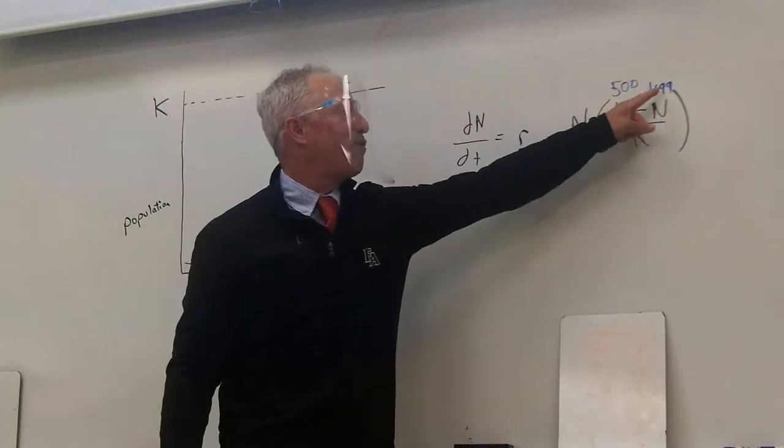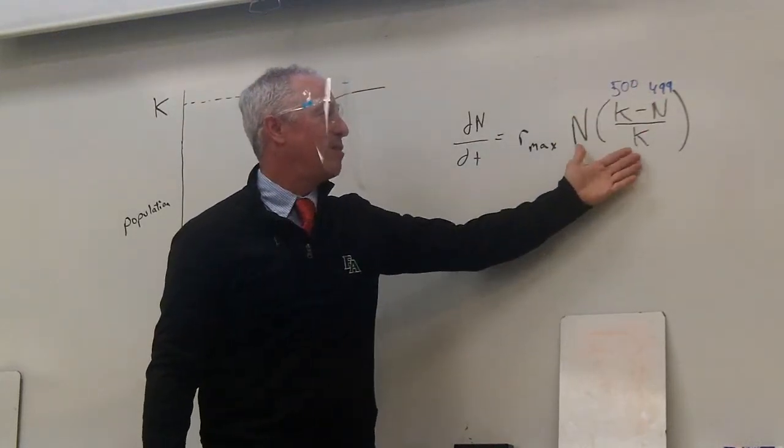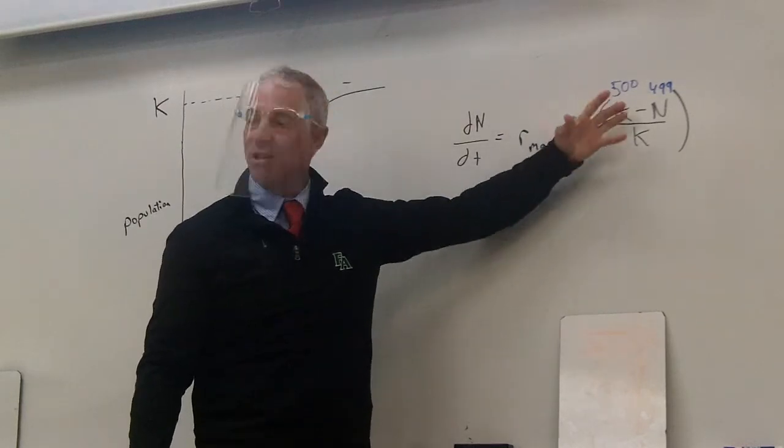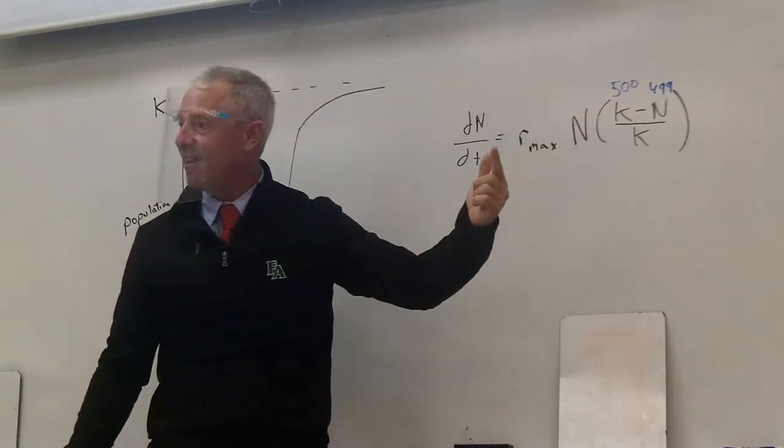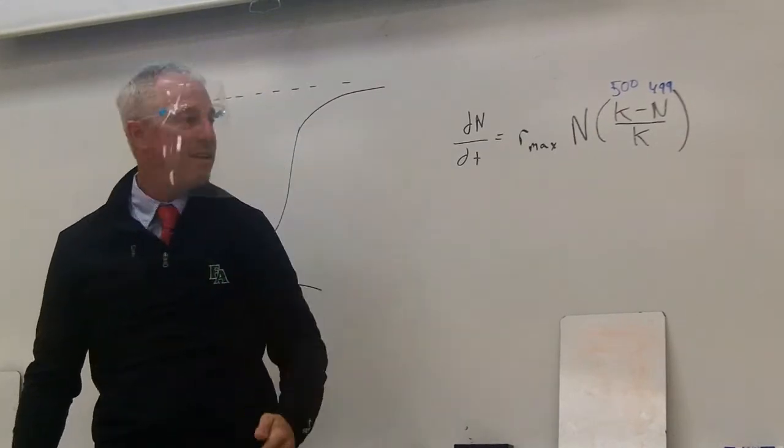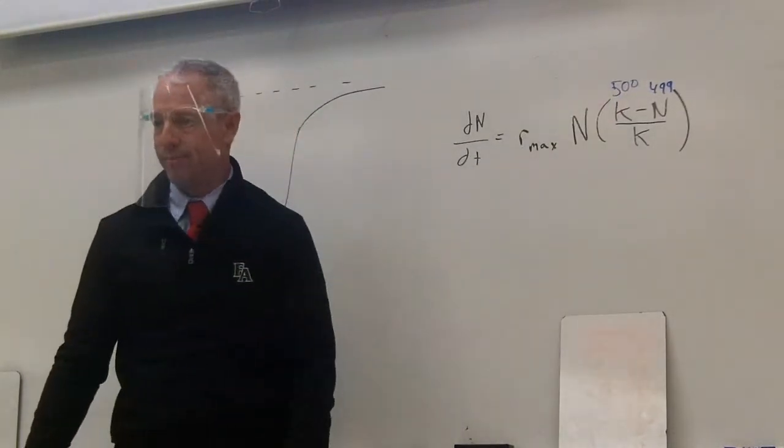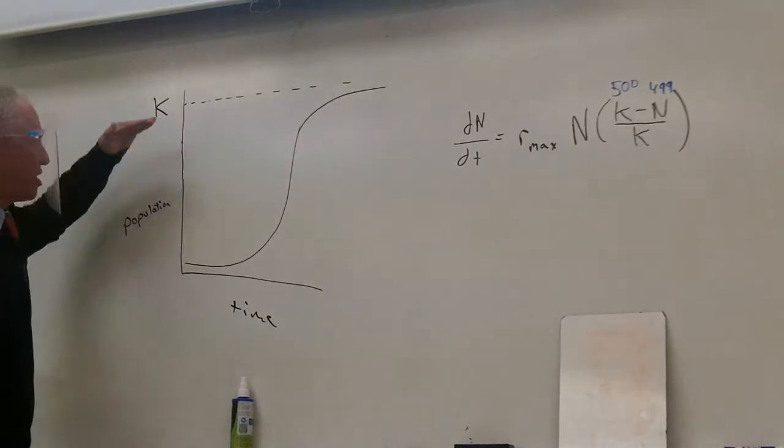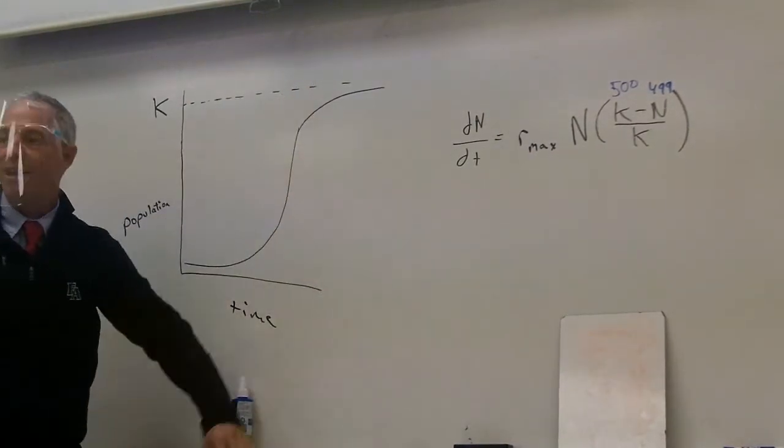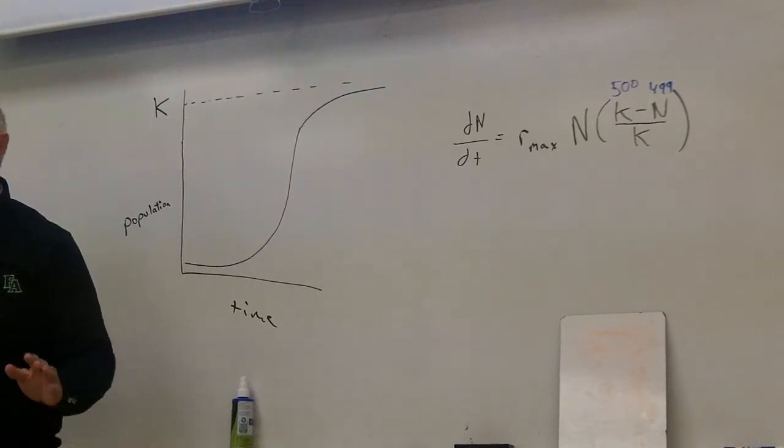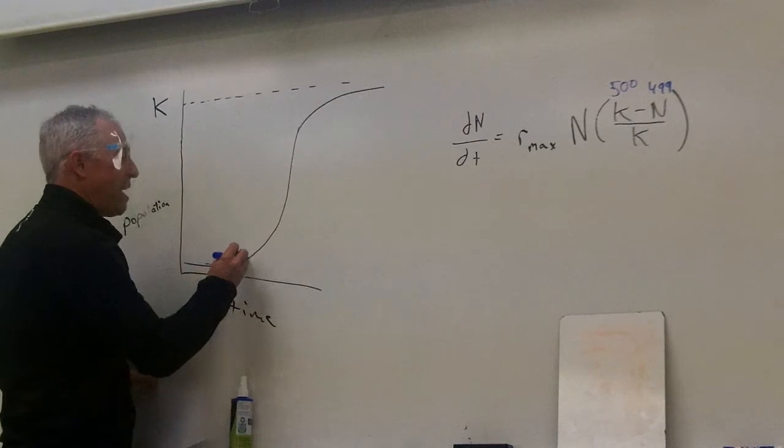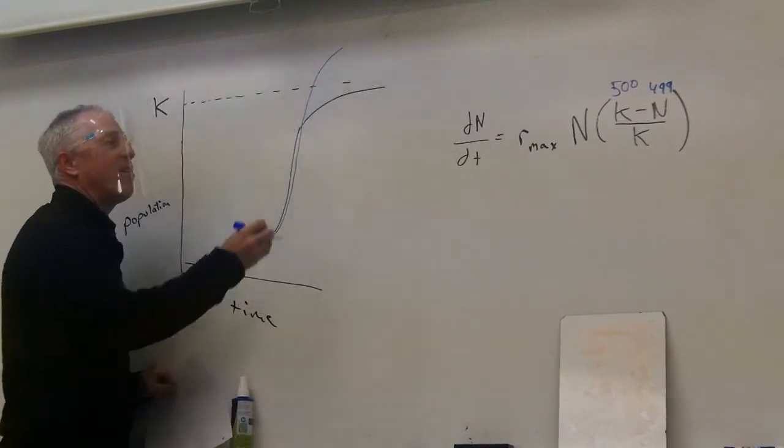What if you were right at the carrying capacity? It'd be 500 minus 500 over 500. So it'd be 0. 0 over 500 is 0. So you couldn't go up any. Because you're right at the carrying capacity. How do you figure out the carrying capacity? They'll give it to you in the problem. It's just a number, it's a maximum amount that the area can hold.